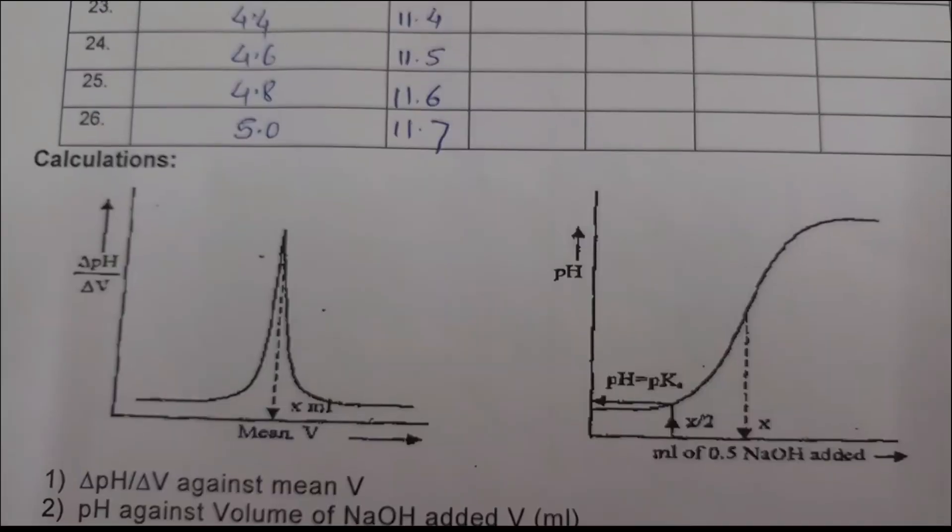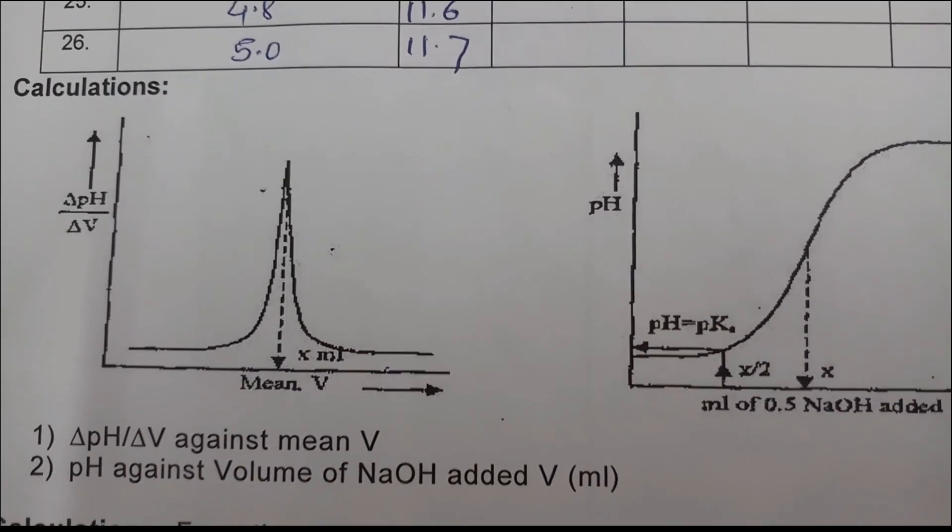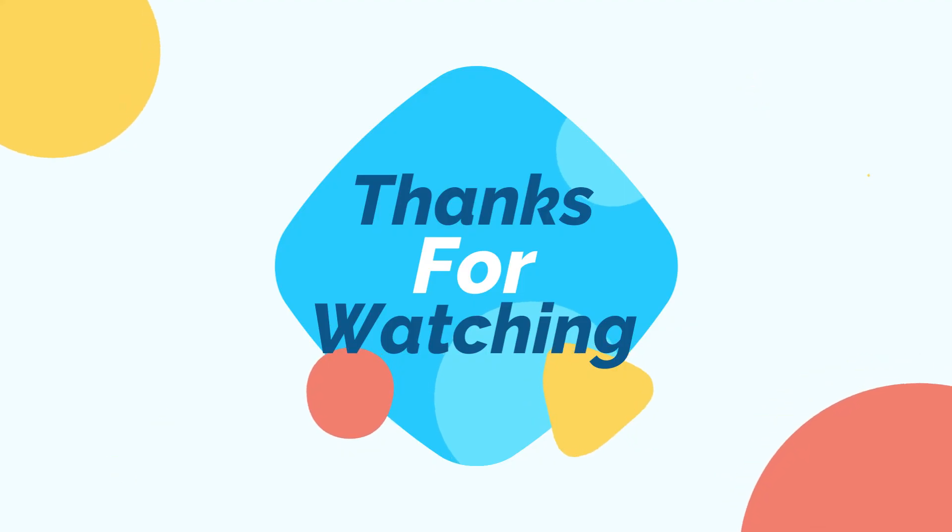So you have to plot the graph. These two graphs of mean V versus delta pH by delta V, and find out the equivalence point of the titration. So that's all. Thanks for watching the video.